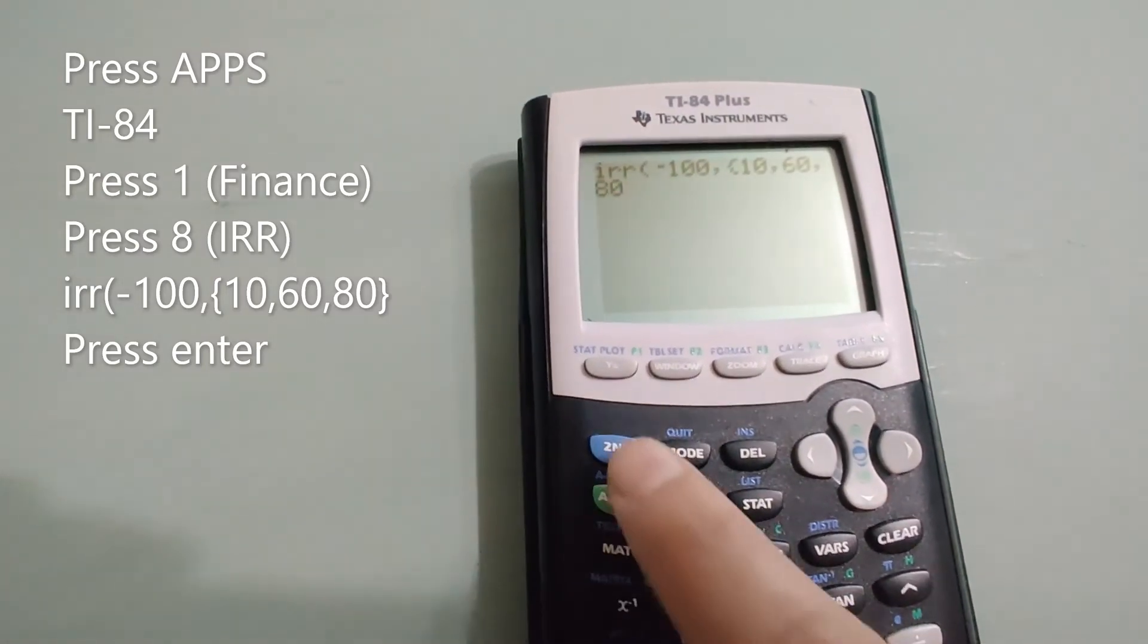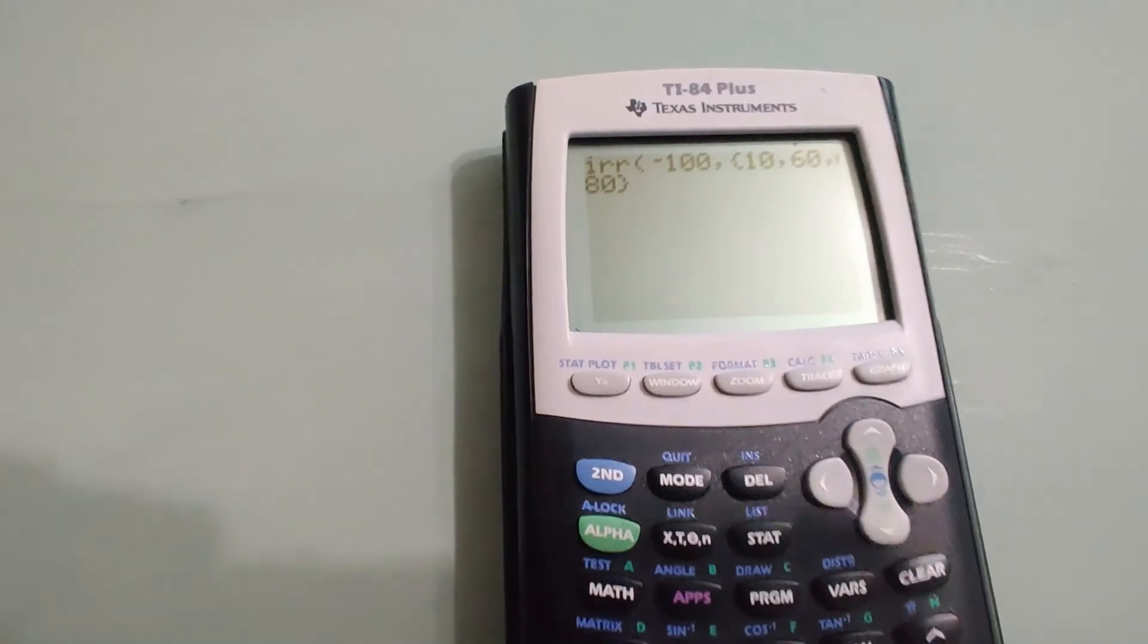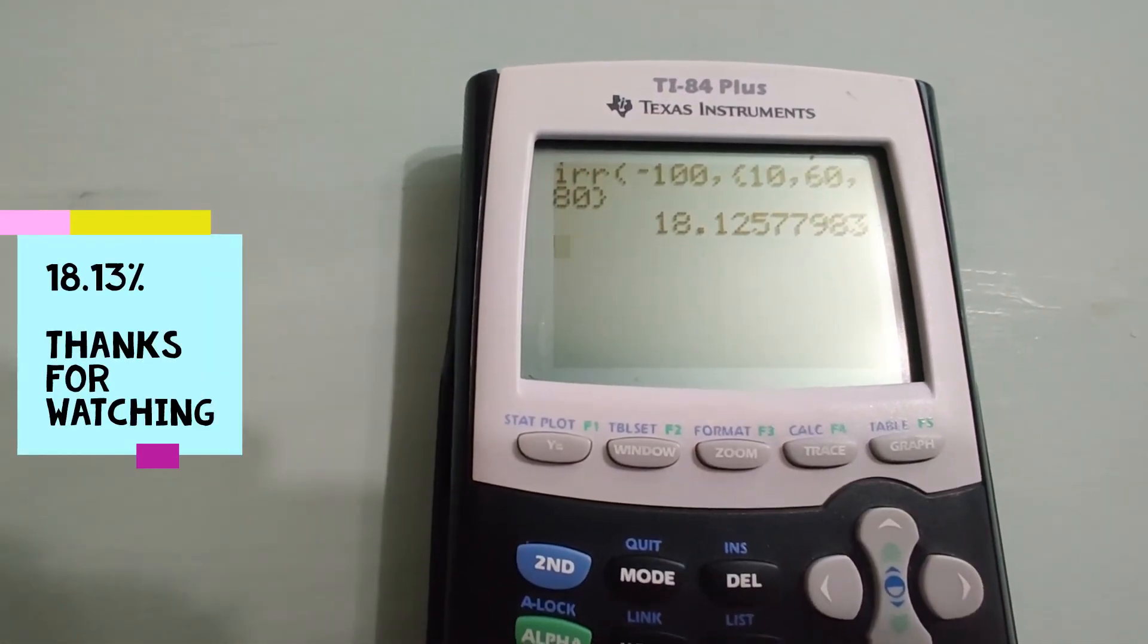And you want to close the brackets. Press second, close brackets, hit enter. You get 18.13.